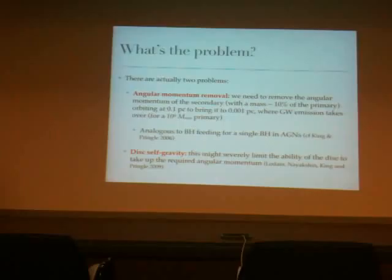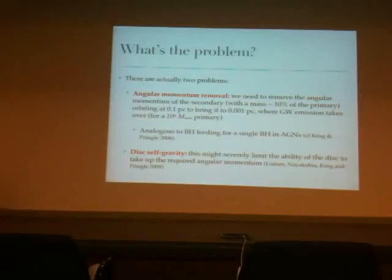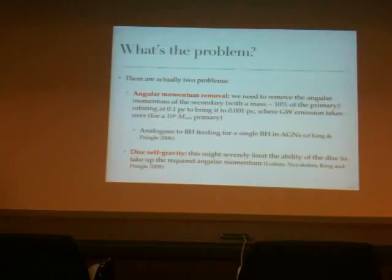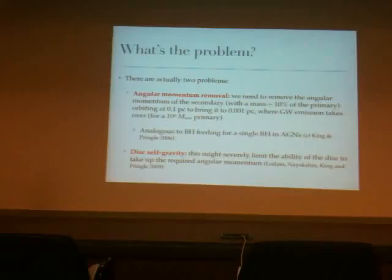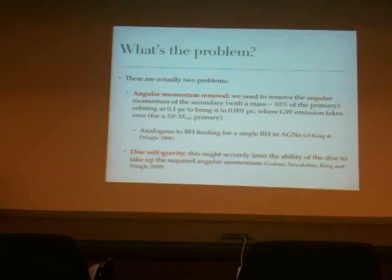There are actually two problems. One is the removal of angular momentum: we have a black hole binary where the secondary has angular momentum that must be removed. If the secondary has a mass of at least 10% of the primary, we need to remove this angular momentum to allow it to move from 0.1 parsec down to 10^-3 parsec — the scale where gravitational wave emission takes over. The other problem is disk self-gravity: the disks are likely to be self-gravitating, which might put severe constraints on the ability of the disk to allow the binary to shrink.